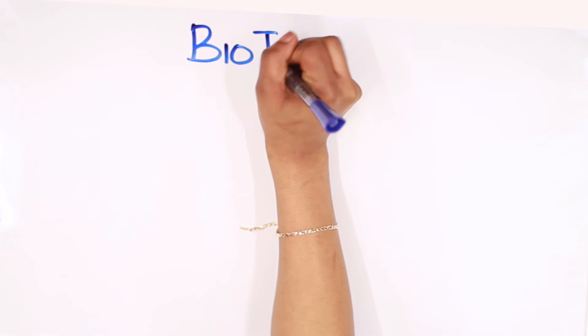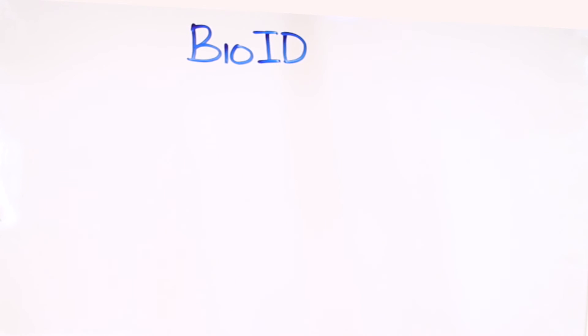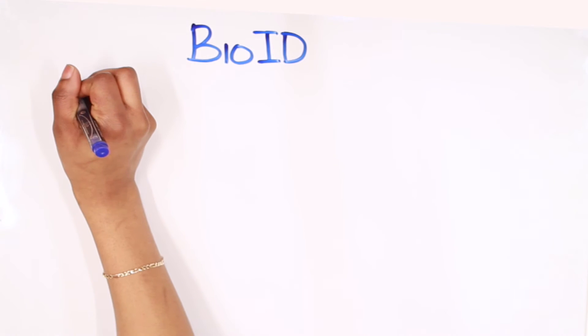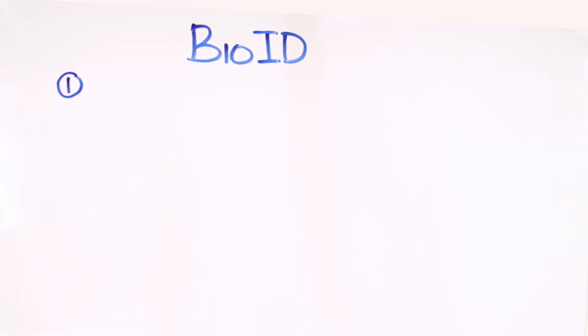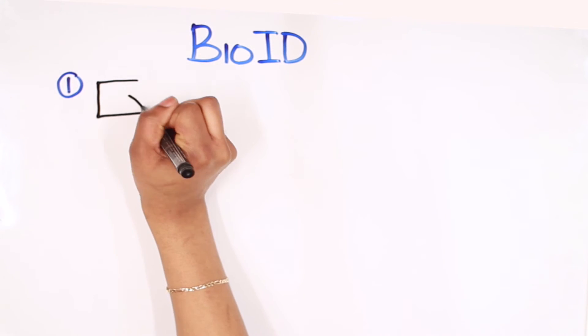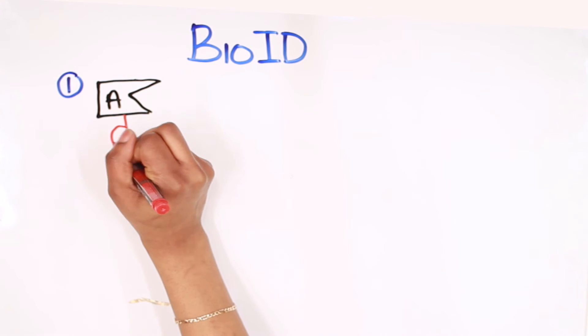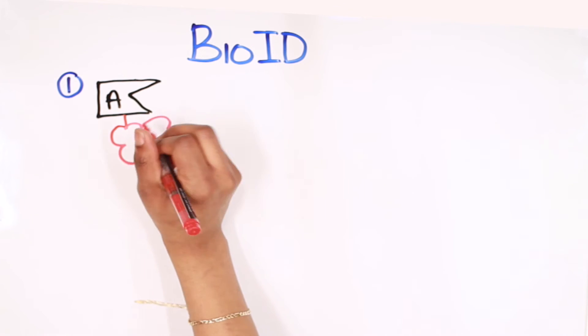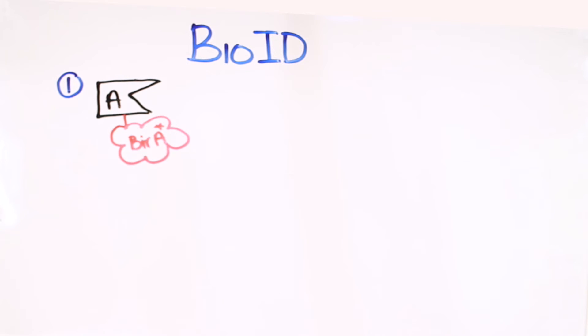What is BioID? BioID was suggested in 2004 and developed in 2012 by Kyle Roux and his collaborators in the US. It is a novel technique to screen for protein-protein interactions. It relies on the fusion through vector cloning of a bait protein seen as protein A with BirA star. However, the fusion of protein A with BirA star must be done in such a way that the characteristics of protein A are not altered.